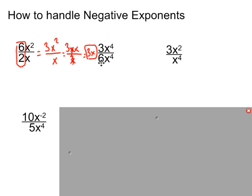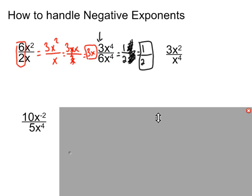What if the coefficients don't divide evenly? We simplify: 3 over 6 simplifies to 1 over 2. Then we have x to the 4th on top and x to the 4th on the bottom. Ask: is everybody happy? Yes. Then we cancel — they completely cancel out, no x's are left. So the answer is 1 half.